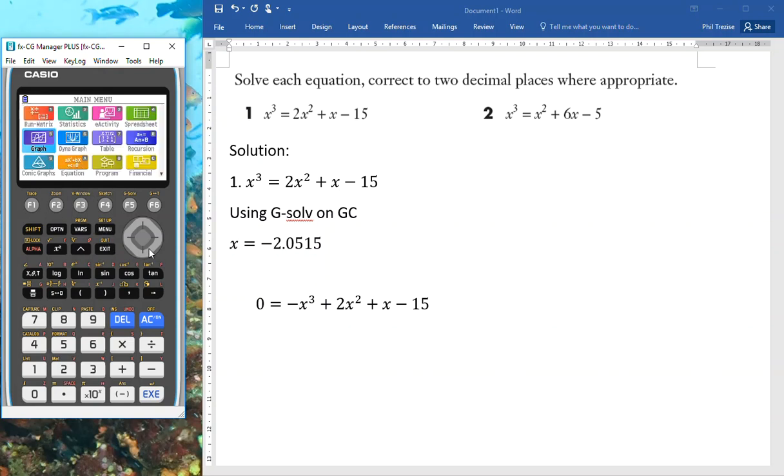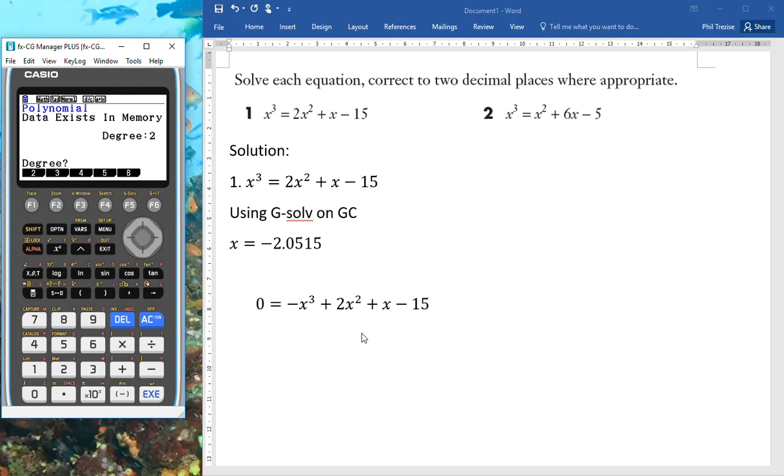If we go back to the menu and we come down here to where it says equation, then I have a polynomial or I have a solver. Let's try polynomial because this is a polynomial. F2 for polynomial. Now, I have to have my polynomial written in standard form this time and it is going to be a third degree polynomial. Now, I write in the coefficients. a is negative 1, b is 2, c is positive 1 here, and d is negative 15. So, there's my polynomial and I'll press solve. And here it is. It's told me that the first solution is negative 2.051, just what we thought.